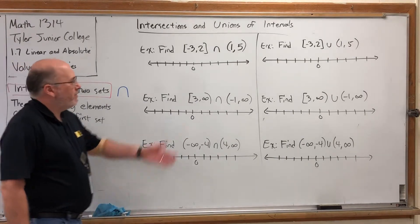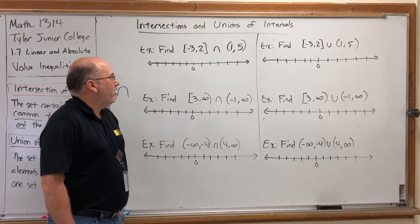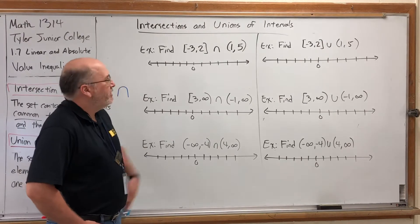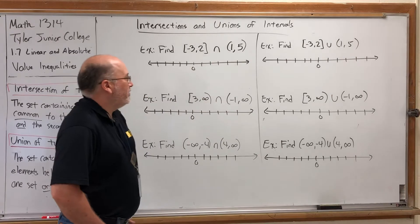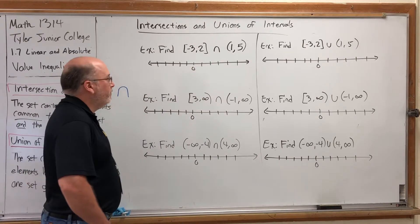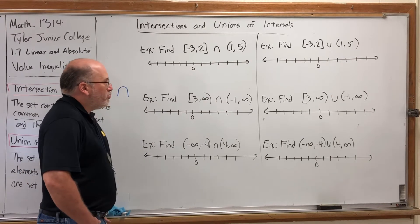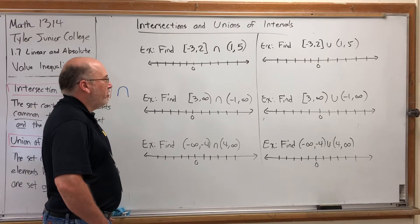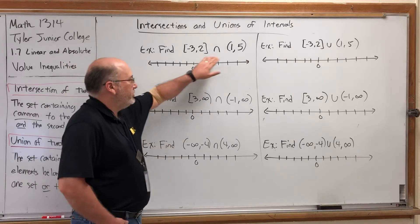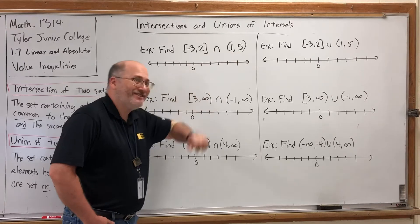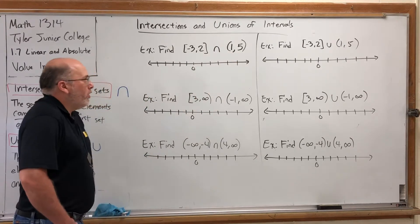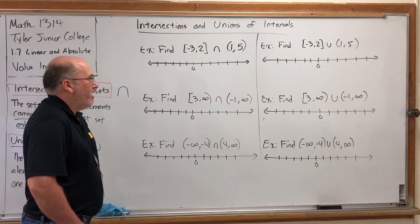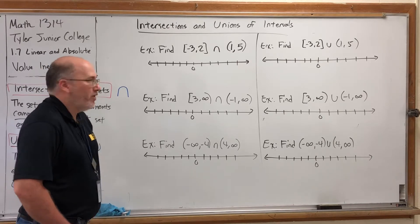For the first one, we want to find the intersection of the interval negative 3 comma 2 with two brackets, and the interval 1 comma 5 with two parentheses. The question is: what do these two intervals have in common? In other words, what numbers on the number line belong to both the first interval and the second interval? One way to find that out is to draw each interval on a number line and see where they intersect or where they overlap.